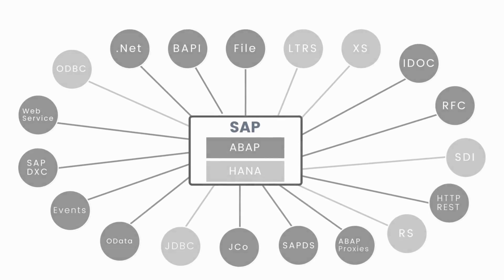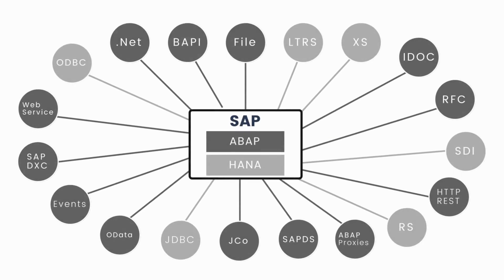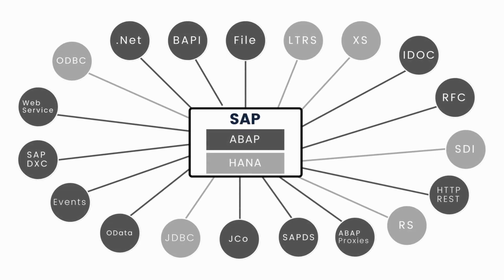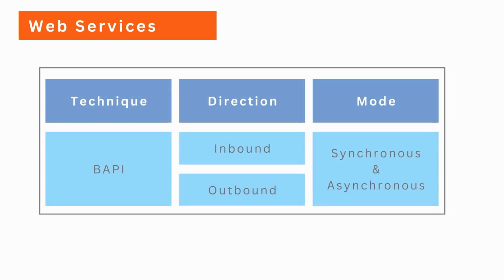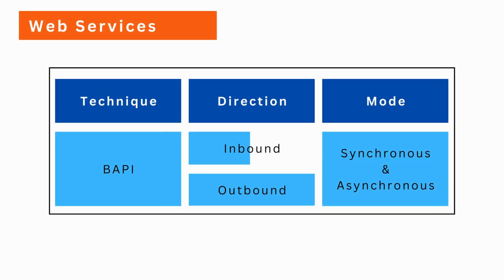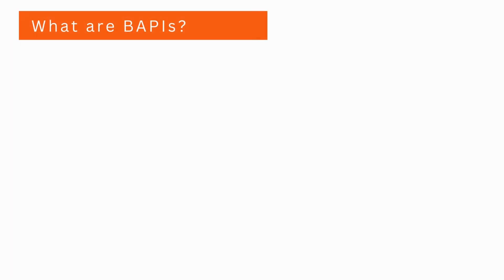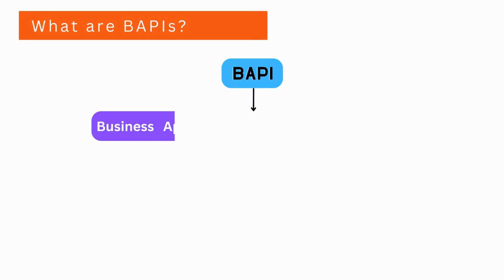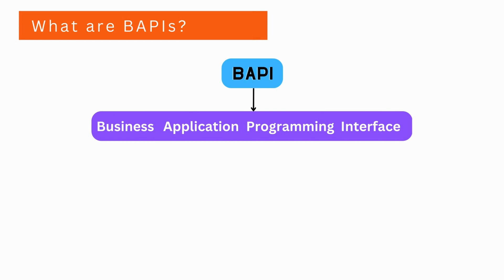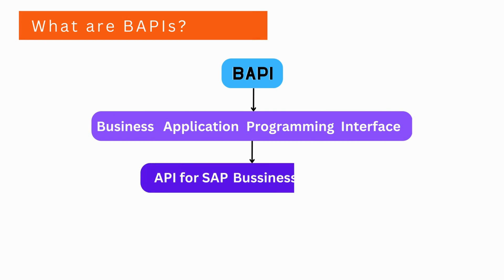In this video, I am going to talk about another SAP proprietary technology called BAPIs. BAPIs support both inbound and outbound integration. They support both synchronous and asynchronous types of communication. BAPI stands for Business Application Programming Interface. It is an API for standard SAP business objects.